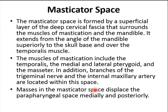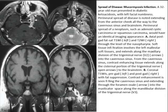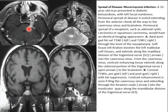The masticator space is formed by the superficial layer of deep cervical fascia surrounding the muscles of mastication and the mandible, extending from the angle of the mandible superiorly to the skull base over the temporalis muscle. The muscles of mastication include the temporalis, medial and lateral pterygoids, and masseter. The trigeminal nerve branches and internal maxillary artery are located within this space. Masses of the masticator space displace the parapharyngeal space medially and posteriorly. The most common masses are infectious, usually from dental caries or dental extractions. Primary malignancies are uncommon, usually due to extension of oropharyngeal or tongue-base squamous cell carcinoma. This case of mucormycosis infection involves the masticator space and extends perineurally along trigeminal nerve branches intracranially into the brain stem.